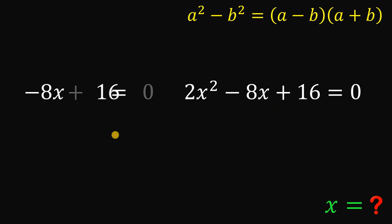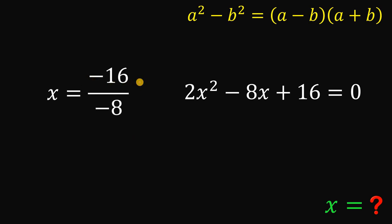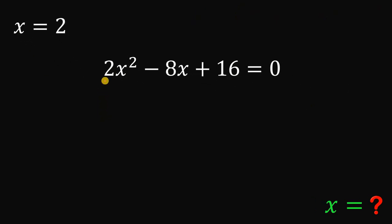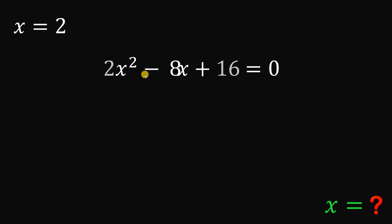We subtract 16 on both sides and then divide by negative 8 on both sides to solve for x. Negative 16 divided by negative 8 gives us positive 2. That is the first value of x. To solve for the other values of x, we use the second equation. All coefficients are divisible by 2, so dividing through by 2 gives us x squared minus 4x plus 8 equals 0.